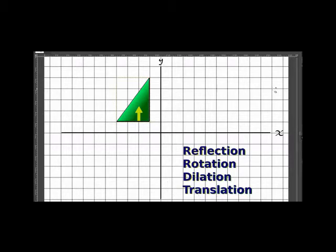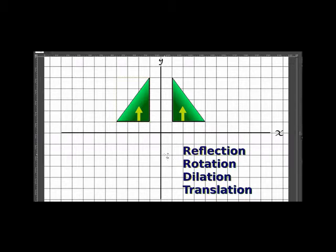Looking at this, we're going to reflect this object, this triangle, across the y-axis, just like a mirror. This is what we would call a reflection. We reflect, just like a mirror, across the y-axis.